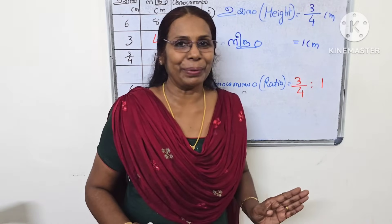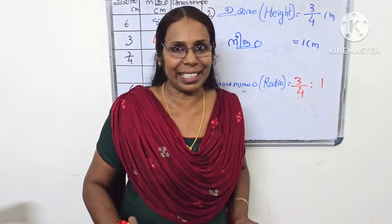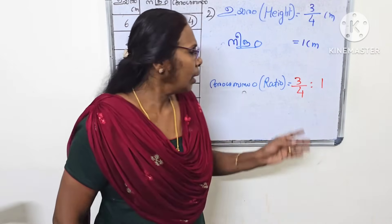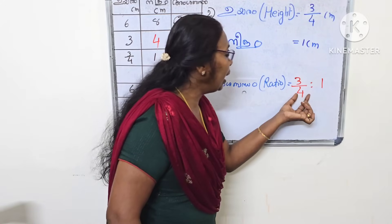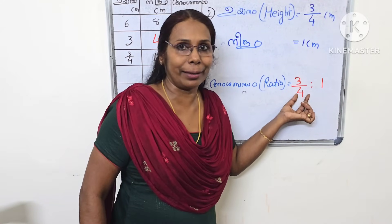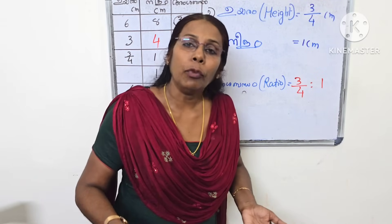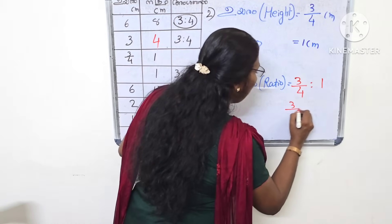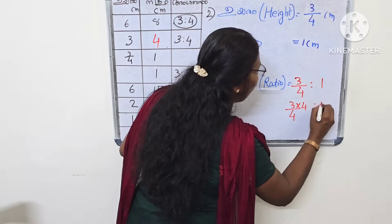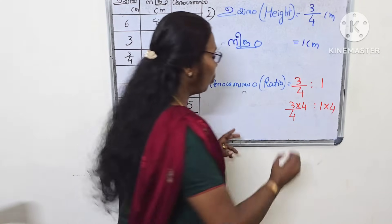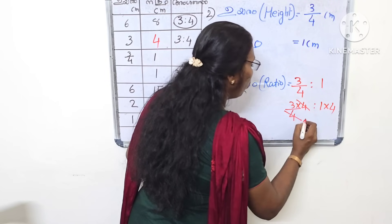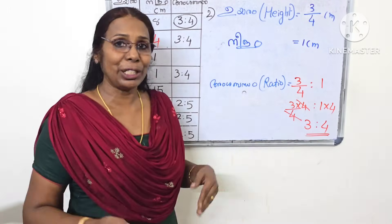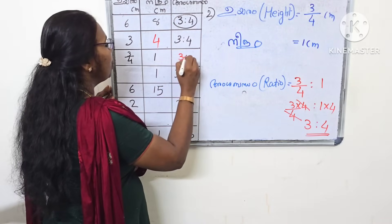Now here is a question: how do you do the same thing in fraction form? Fraction form is the same thing. One thing we do is that the 4 of our calculation is 4. Where do you do the same thing? 3 by 4 is to 1. The ratio is 3 is to 4.